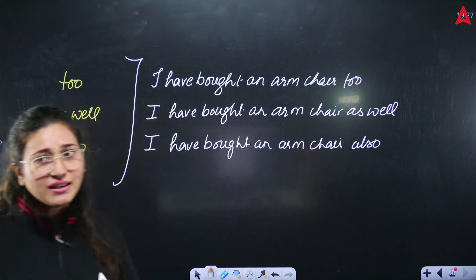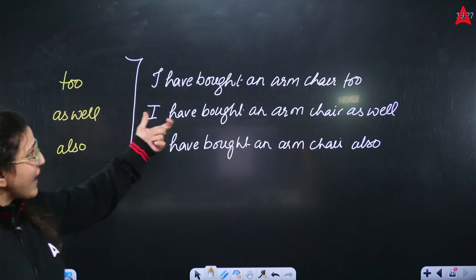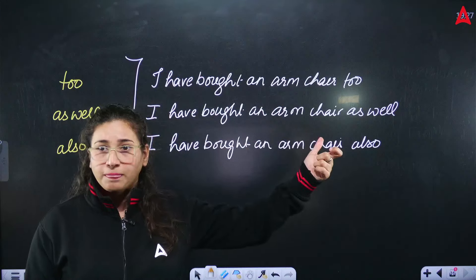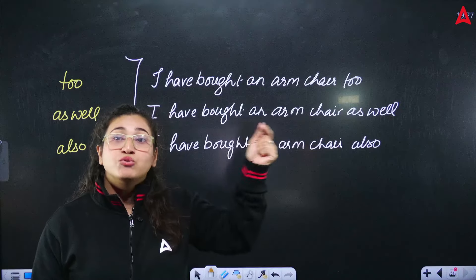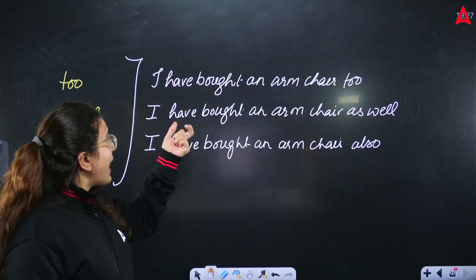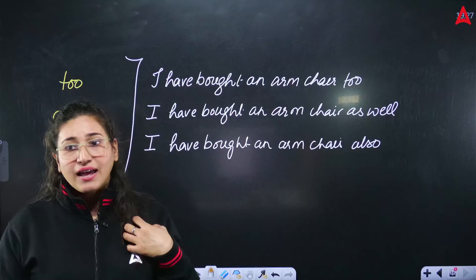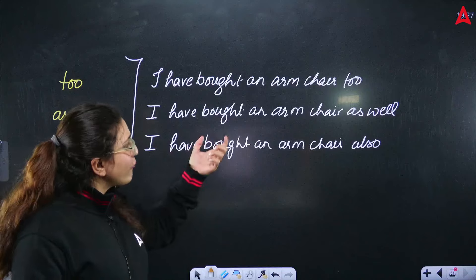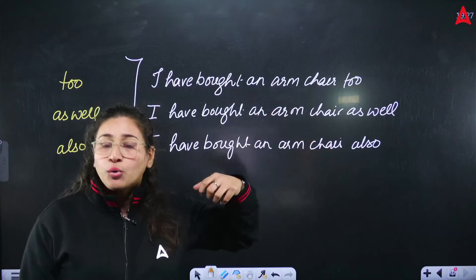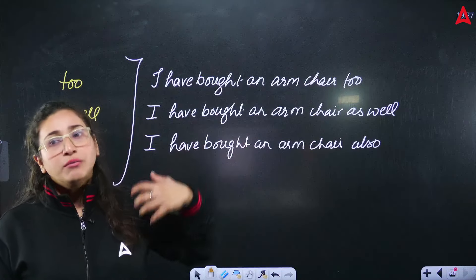How many sentences can be related to this. Too: I have bought an armchair too. I have bought an armchair as well. I have bought an armchair also.